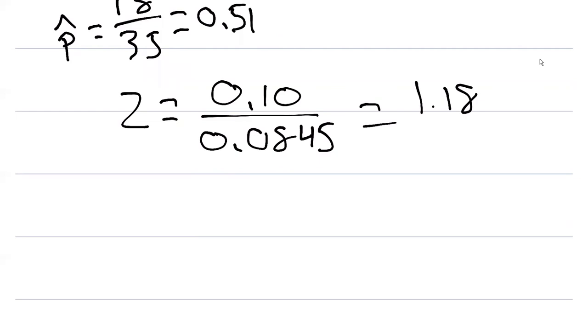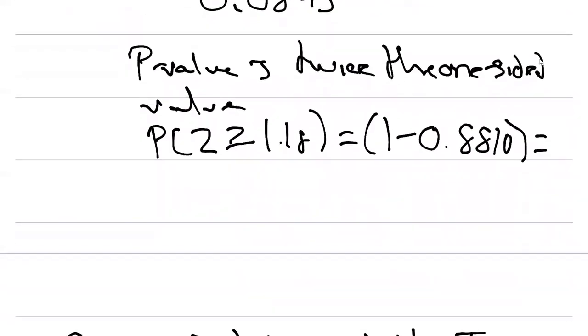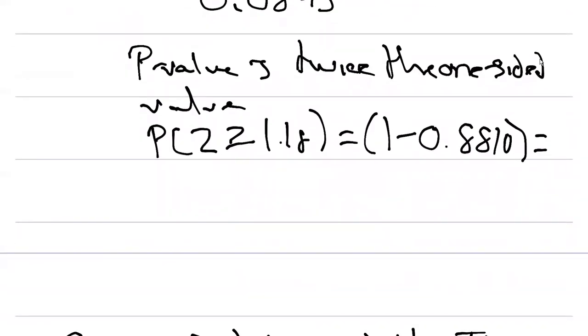And so here we could look up on the Z table what the corresponding value might be. And here we can say that the P value is twice the one-sided value. And so here we could say that the probability that Z is greater than or equal to 1.18 equals 1 minus 0.8810. Remember I'm getting this from the Z table, or that would equal in this case 0.1190.